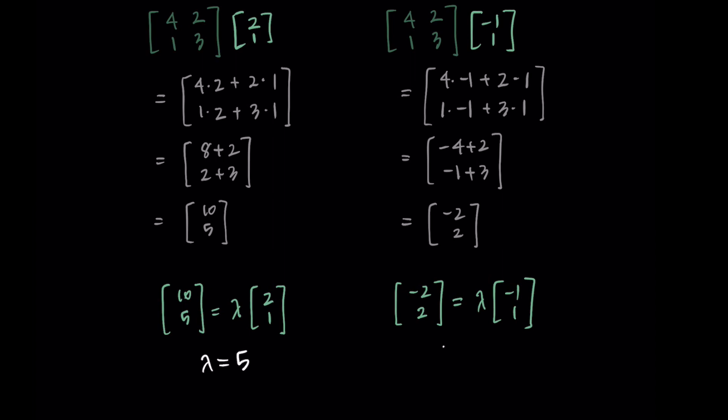Then for the second eigenvector, I'm seeing that if lambda equals 2, I'm multiplying the vector by 2, and I'm getting [-2, 2] like I wanted. These are eigenvalues that correspond to each eigenvector. So lambda equals 5 and lambda equals 2.